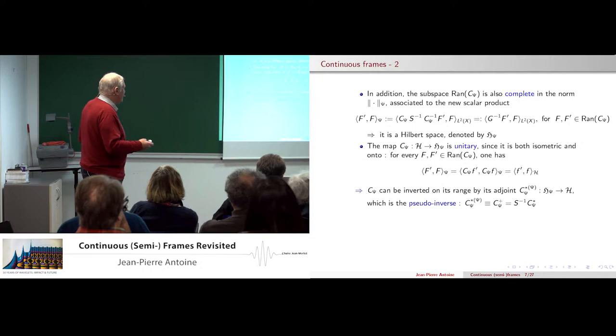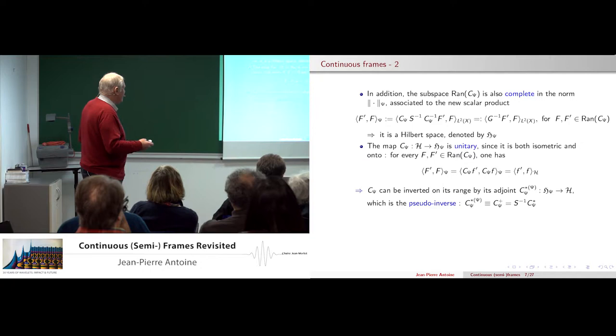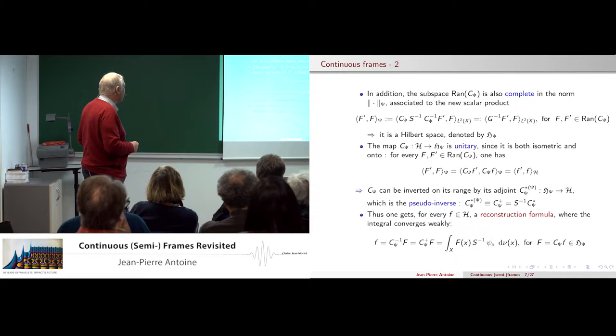You can invert on the range because you have this unitary map, and what you find is that the inverse is simply the pseudo-inverse — the inverse modulo coming back to the original space. And you have reconstruction, which is the usual formula we have in wavelets, for instance.